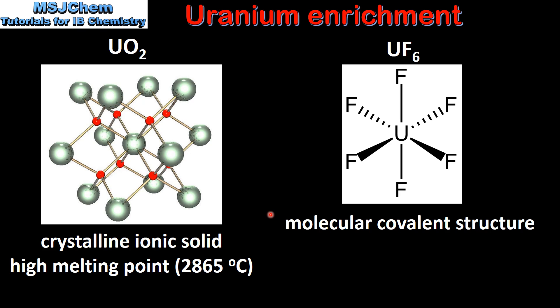Uranium hexafluoride has a molecular covalent structure. The uranium atom is covalently bonded to six fluorine atoms. This gives it an octahedral geometry with a bond angle of 90 degrees.